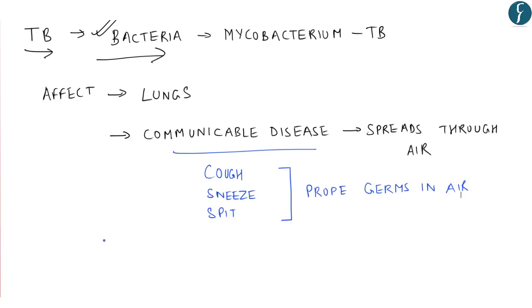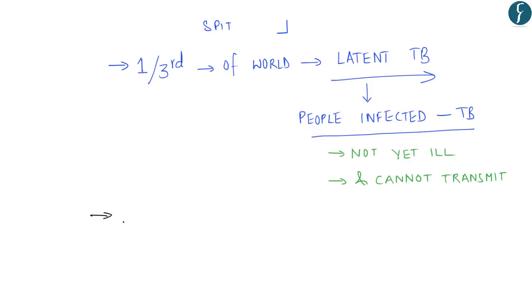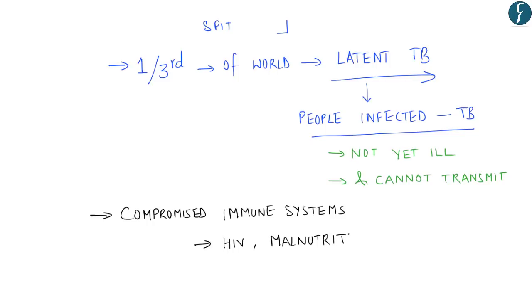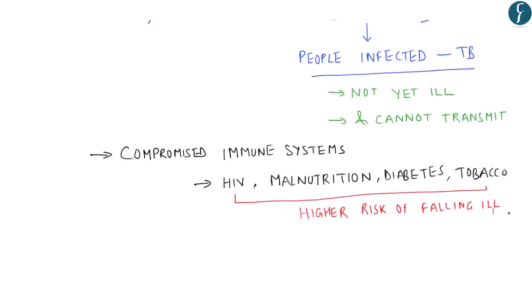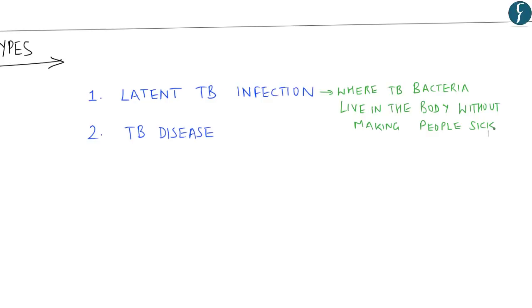As per WHO, one-third of the world's population has latent TB or passive TB. Latent TB means that people have been infected by the TB bacteria but are not yet ill with the disease and cannot transmit it. People having compromised immune systems — such as people living with HIV, malnutrition, diabetes, or those who use tobacco heavily — have a much higher risk of falling ill. There are basically two types of TB conditions: latent TB infection and TB disease. People with latent TB infection do not feel sick, do not have symptoms, and cannot spread TB bacteria to others.